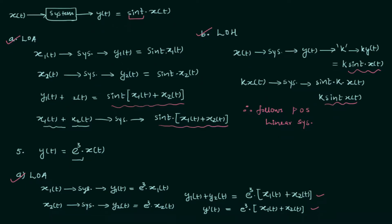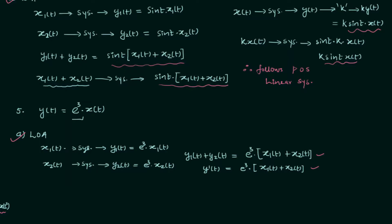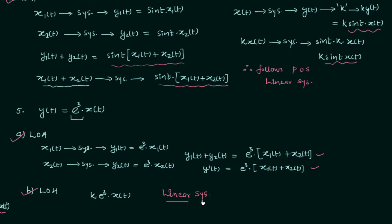Now checking the law of homogeneity: when you check it, you will find the system follows the law of homogeneity. The output in the first case is k · e^3 · x(t), and in the second case it is also k · e^3 · x(t). So the system follows both the law of additivity and the law of homogeneity, therefore it follows the principle of superposition and the system is linear in nature. Whenever we multiply a coefficient dependent on time or independent of time, the system is going to be linear.